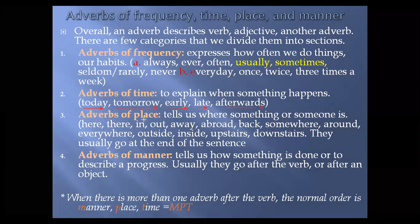There's another category: adverbs of place. An adverb can describe place — it tells us where something or someone is. Examples include: here, there, in, out, away, abroad, somewhere, around, everywhere, outside, inside, upstairs, and downstairs. You can identify them by asking whether they describe a location.